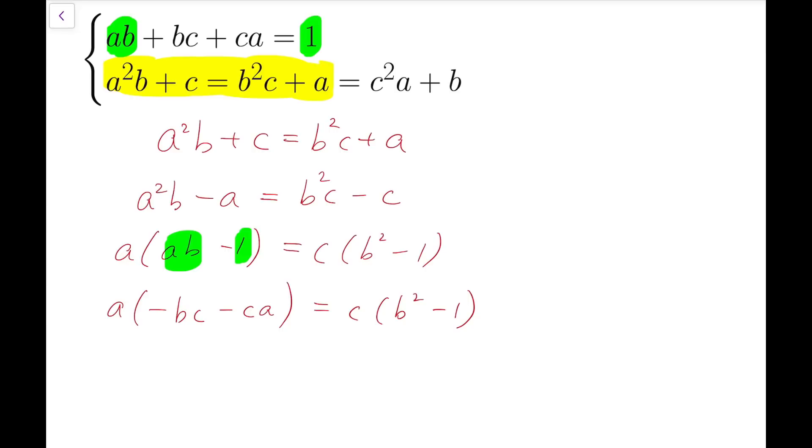We factor out the common factor on the left-hand side. -ac times (b + a) equals c times (b² - 1). So now both sides have c, so we have common factors to take again. c times (b² - 1) plus a times (b + a) equals 0.